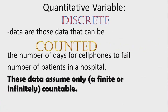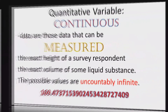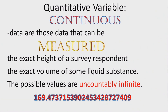A quantitative variable can be discrete. Discrete data are those that can be counted — for example, the number of days for cell phones to fail or the number of patients in a hospital. These data assume only a finite or countably infinite number of values, like one, two, three.